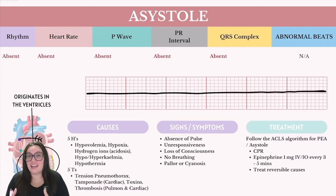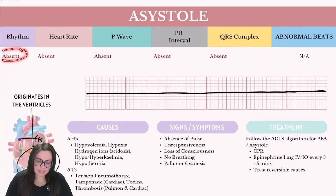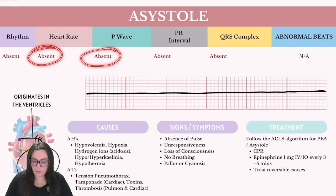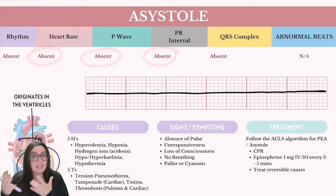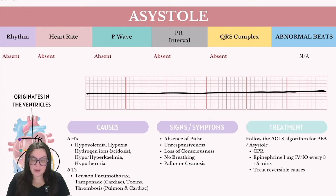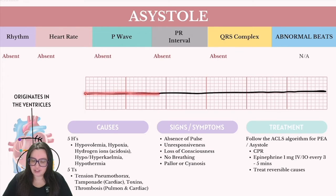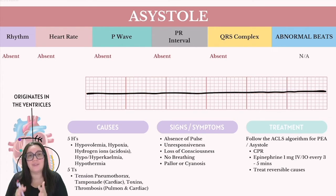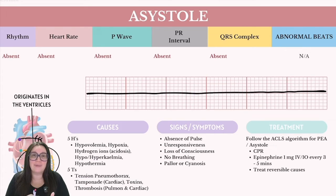When it comes to rhythm identification, the rhythm is going to be absent, heart rate is going to be absent, there is no P wave activity, no PR interval, and the QRS is also absent. We are literally dealing with a flatline. This is one of the most easily identifiable rhythms because of the complete absence of electrical activity.